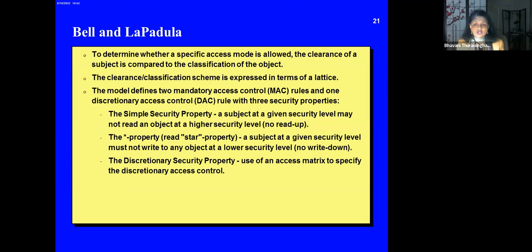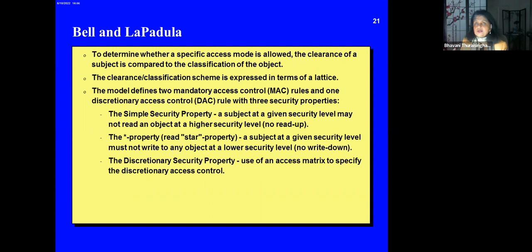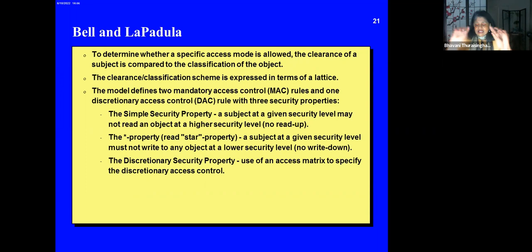To determine whether a specific access mode is allowed, the clearance of a subject is compared to the classification of the object. Users are cleared at unclassified, confidential, secret, or top secret — unclassified is bottom, then confidential, then secret, then top secret. Similarly, data has classifications: top secret, secret, confidential, unclassified. This clearance/classification scheme is expressed in terms of a lattice. For simplicity you can think of it as a straight line: unclassified, then confidential, then secret, then top secret.